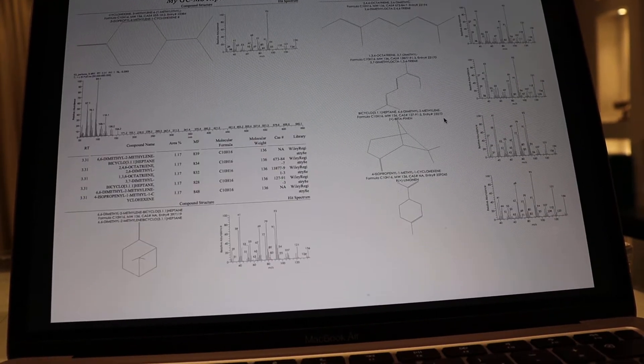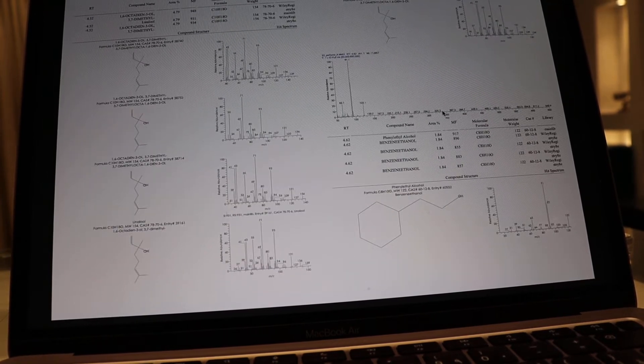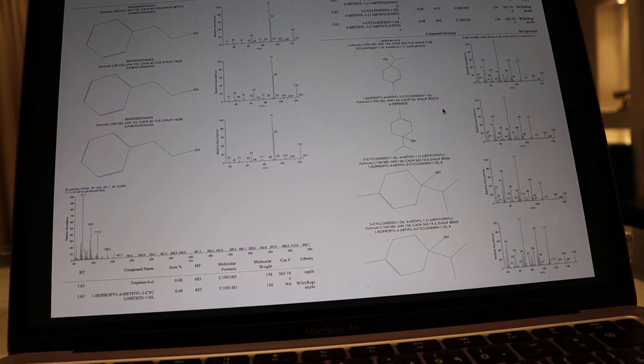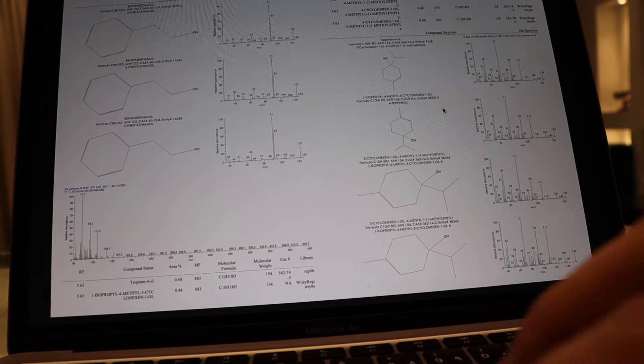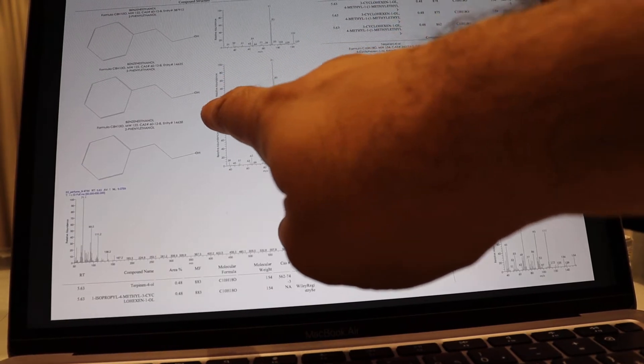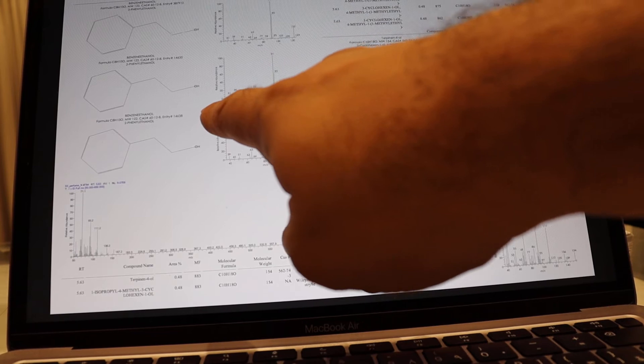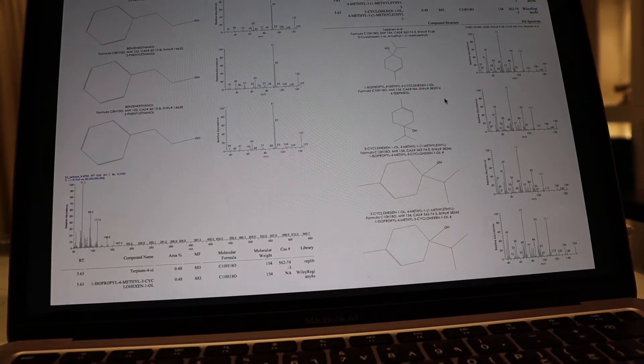So the perfume that we have here, the GCMS is just some sort of screenshots that shows you different molecules that are coming off, different molecules, different molecules. In the case of being the synthetic, you can easily say well this comes from phenyl ethanol for example.